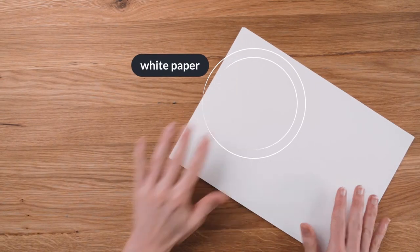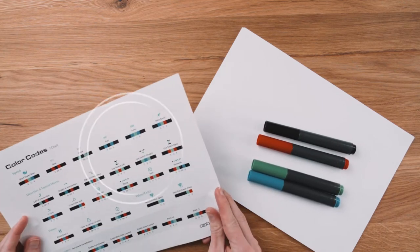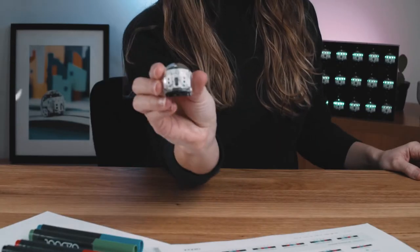To create color codes, all you need is white paper, black, green, blue and red markers, a color code chart, and of course your EVO.